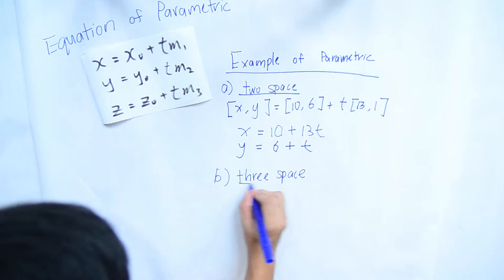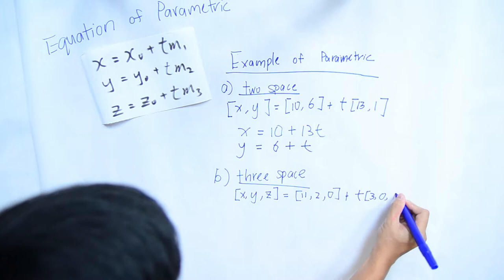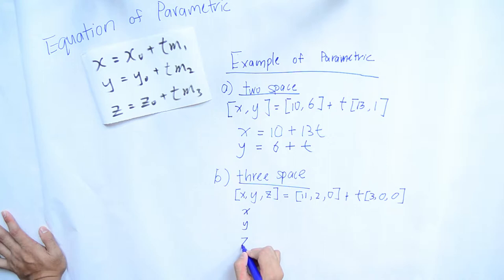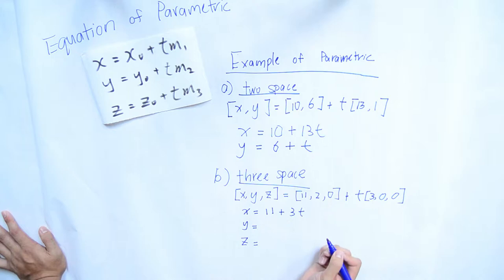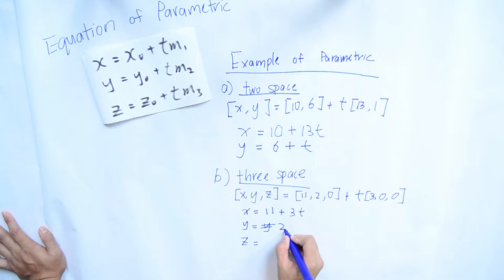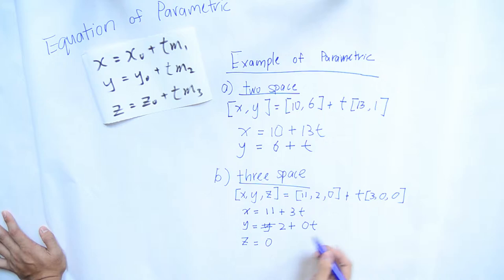The second example is three-space. We list out x, y, and z. The point of x is 11 with 3t. There is a correction: y should be 2 plus 0t, and z equals 0 plus 0t. So z equals 0 and y equals 2.